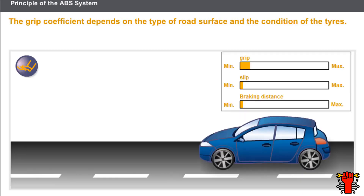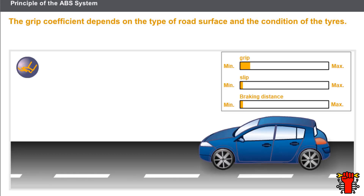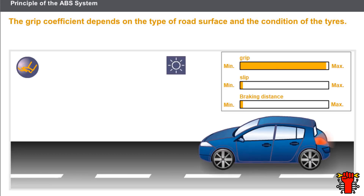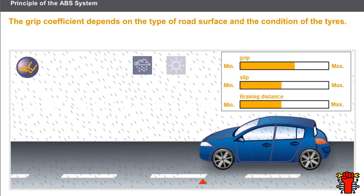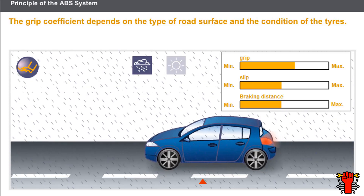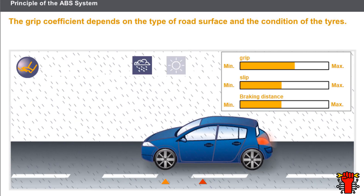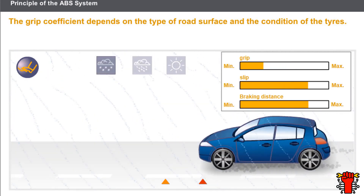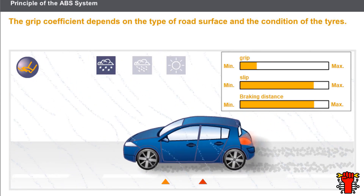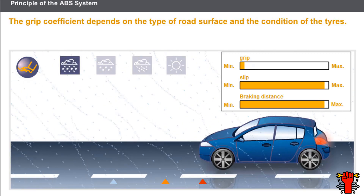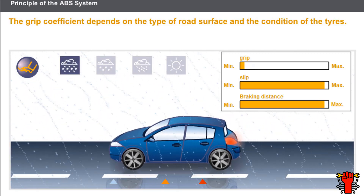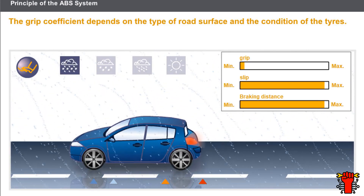Now let's take a look at the different conditions of grip. On dry concrete, the grip coefficient is at its maximum and the slip is almost zero. On a wet road surface, there is less grip and the slip value increases. On fresh snow, the grip coefficient drops and the slip value is very high. On ice, the grip coefficient is almost zero and the slip value is at its maximum level.